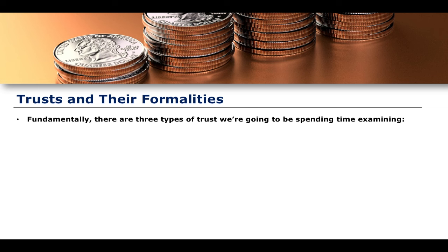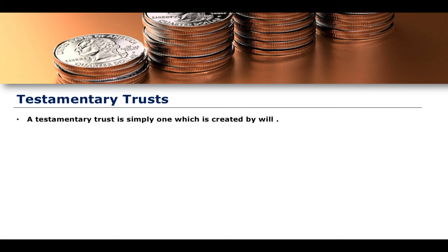For the most part, we're going to be spending our time looking at mainly two types of trusts. We're going to be talking about testamentary trusts and we're going to be talking about inter vivos trusts. When we talk about trusts of land, it's a little bit different, but broadly this is what we'll be examining: inter vivos trusts versus testamentary trusts. A testamentary trust is simply a trust which is created by will — created by somebody's last will and testament. The person who makes that will is called a testator.